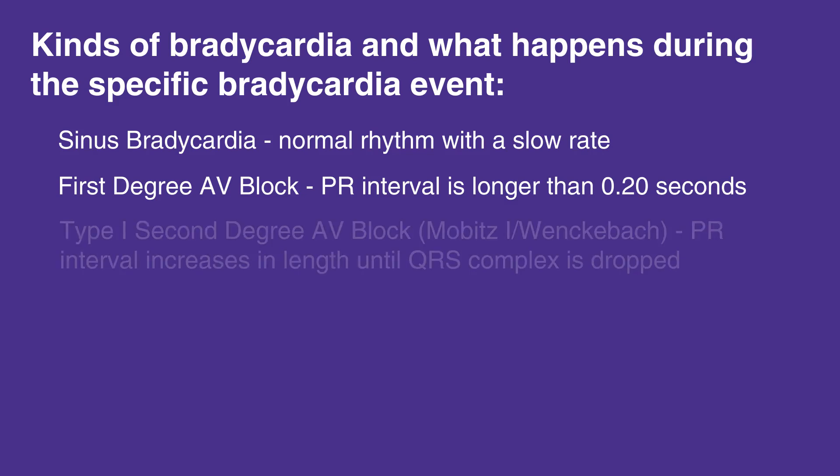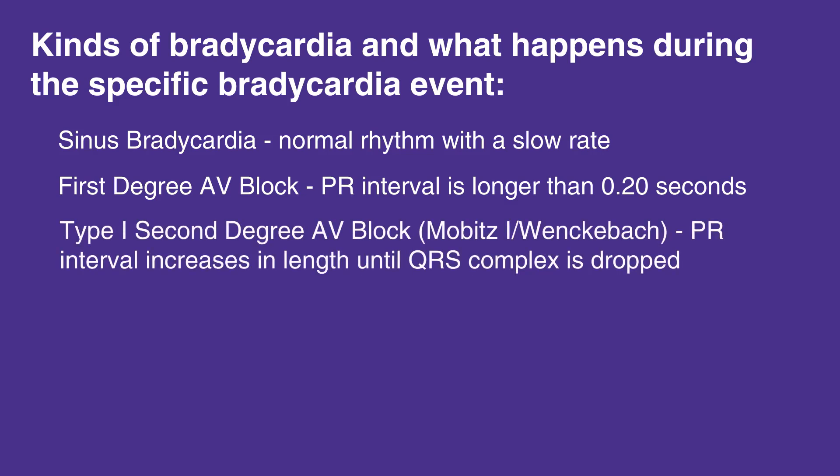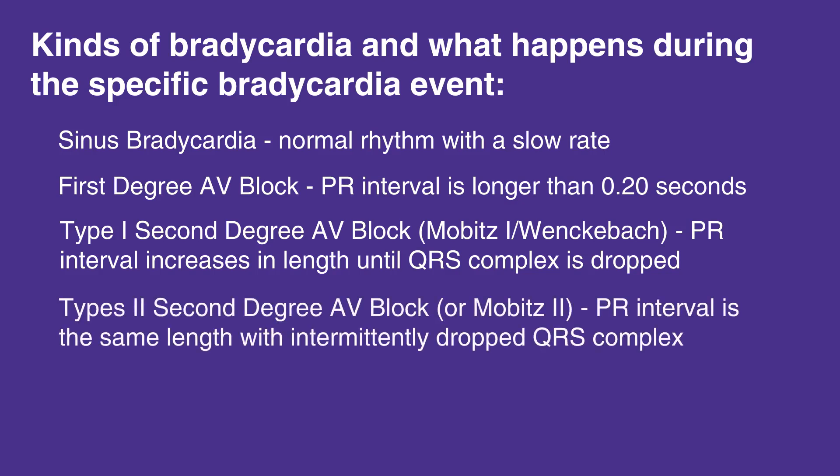Type 1 second degree AV block, or Mobitz I Winklebach: PR interval increases in length until QRS complex is dropped. Type 2 second degree AV block, or Mobitz II: PR interval is the same length with intermittently dropped QRS complex.